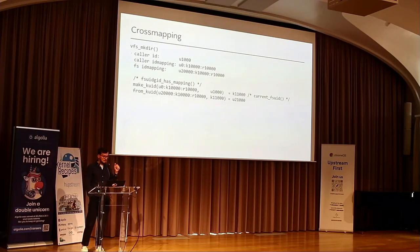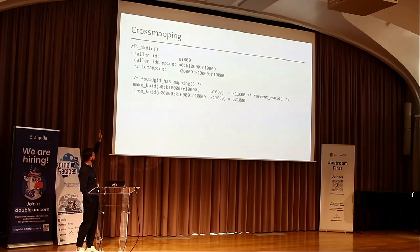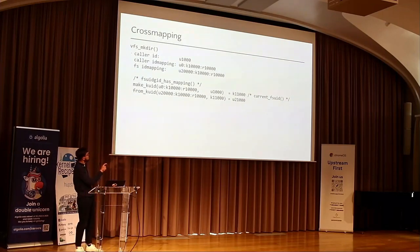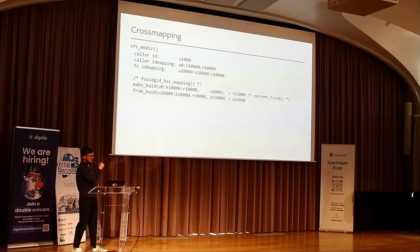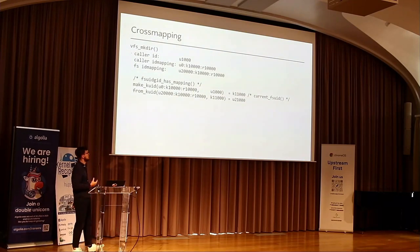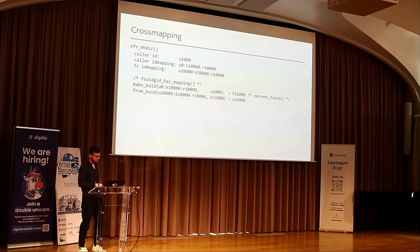For example, a caller with UID 1,000 enters the kernel. The caller's ID mapping maps U0:K10000, and the file system's ID mapping maps files owned by 20,000 on disk to kernel ID 10,000. First, the kernel maps the caller's UID 1,000 to kernel ID 11,000. Then it calls from_kuid and looks up what raw user space ID kernel ID 11,000 maps to in the file system's ID mapping — yielding, for example, 21,000. That raw value is what would be put on disk. That's the whole algorithm.